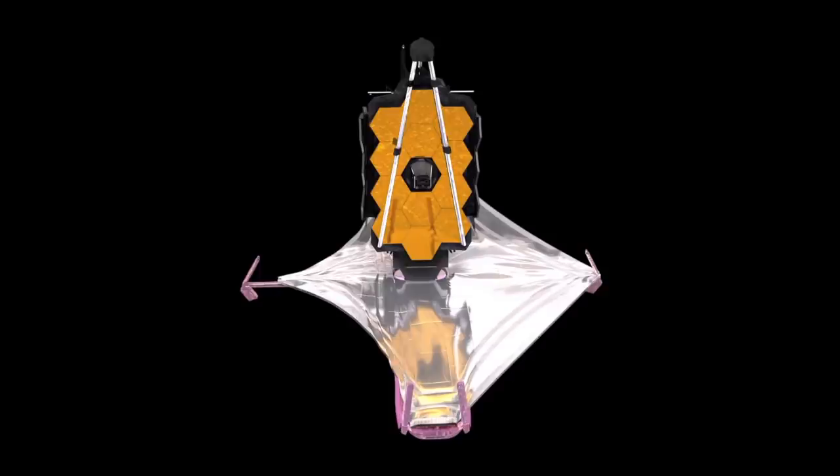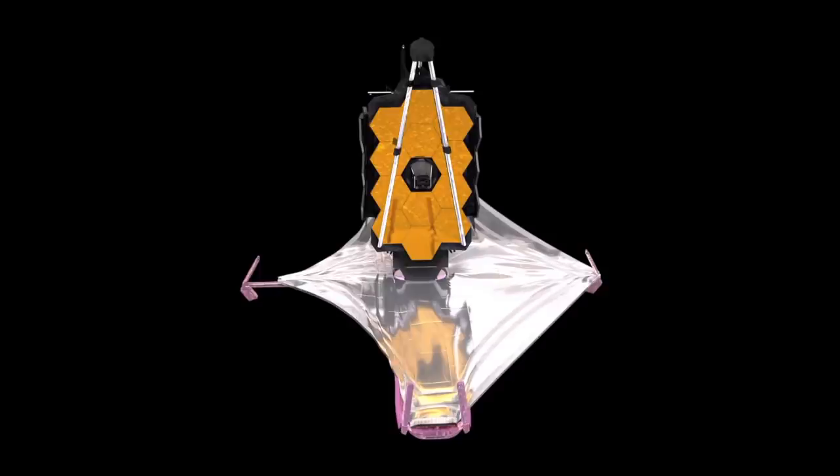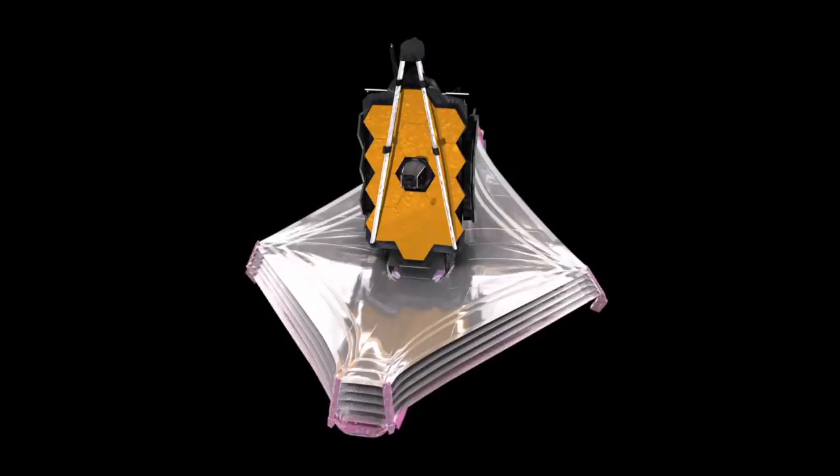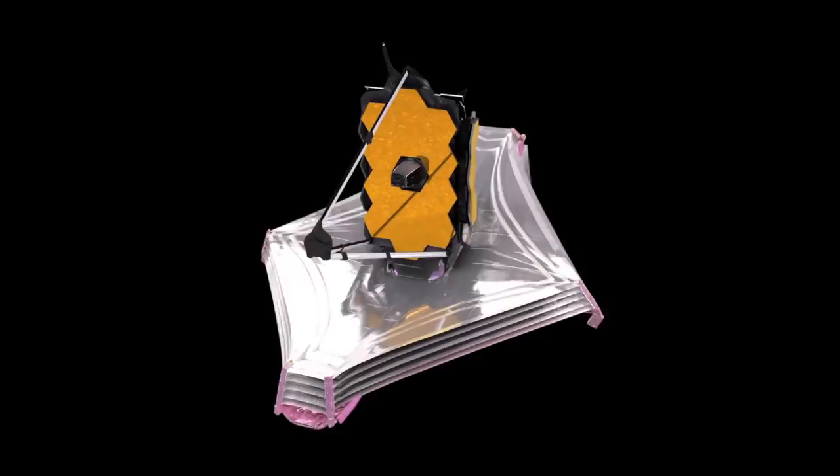JWST then unfolded itself in an unprecedented magnificent feat of engineering without any major problems. This was quite an accomplishment, since the telescope had to be launched folded so that it would fit in the payload fairing of the Ariane 5.